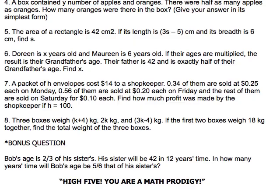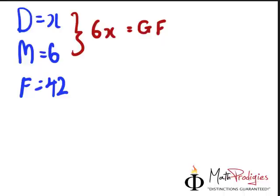That's what it says. Father is 42 and it's exactly half of their grandfather's age. So 42 is equal to half of grandfather's age. Grandfather's age is therefore more by 2 times. So 42 times 2 gives you 84 years old.